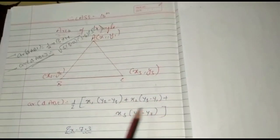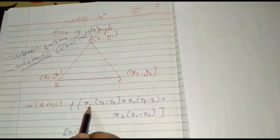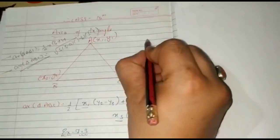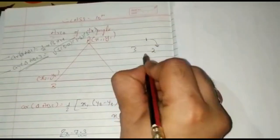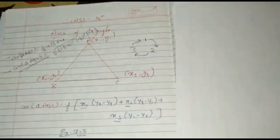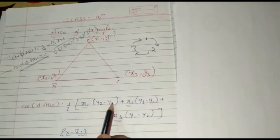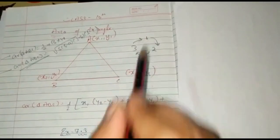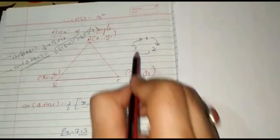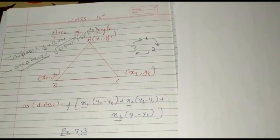To learn this formula, you have to understand the cyclic pattern. Write x1, x2, x3 and think of the cycle 1→2, 2→3, and 3→1. For x1, what comes after 1 is 2 and 3, so we write y2 minus y3. For x2, what comes after 2 is 3 and 1, so y3 minus y1. For x3, what comes after 3 is 1 and 2, so y1 minus y2. This is the formula for finding the area of a triangle on the coordinate plane.